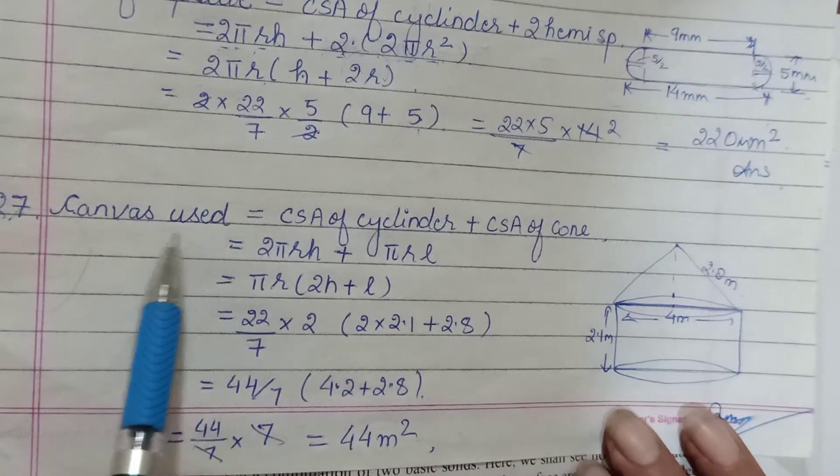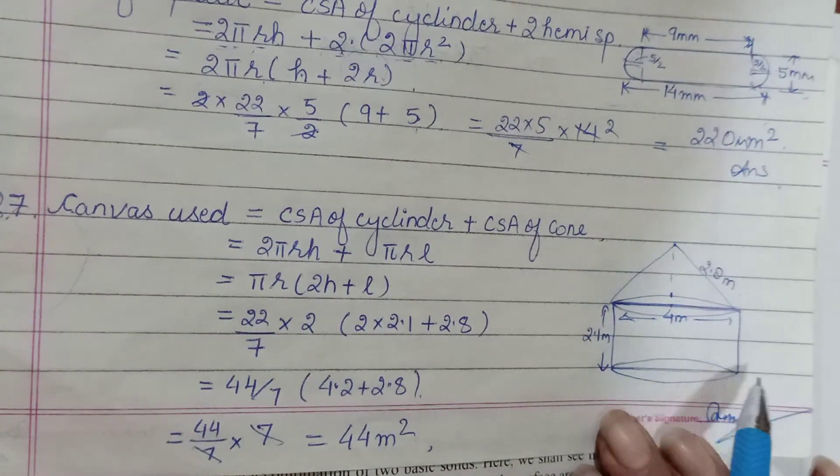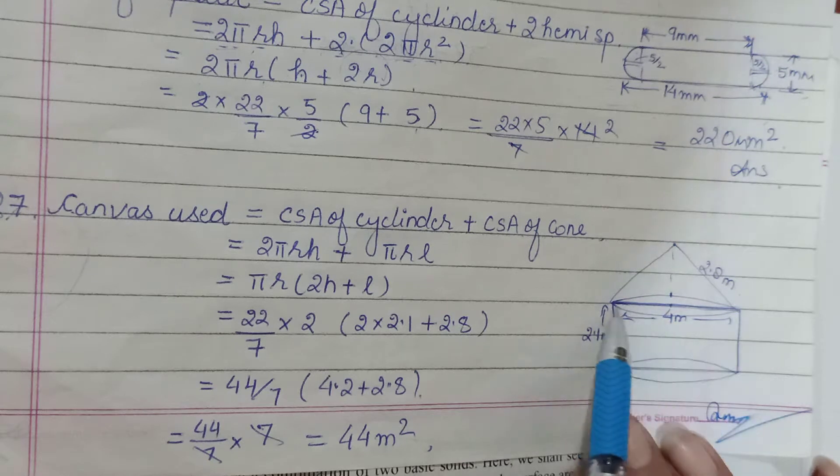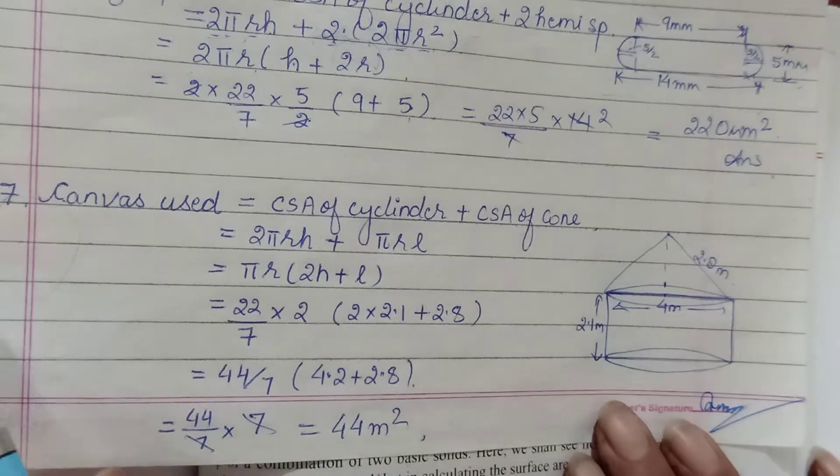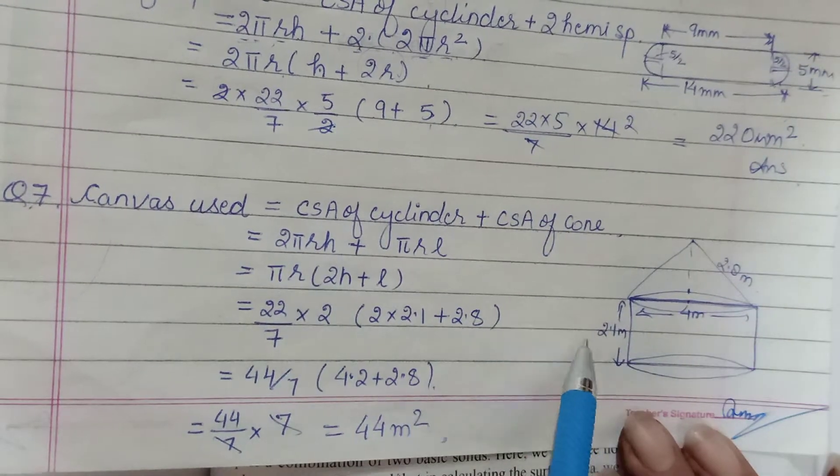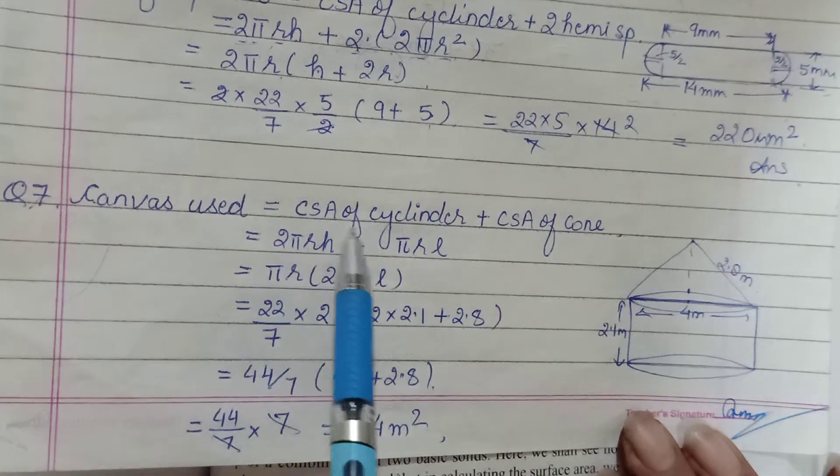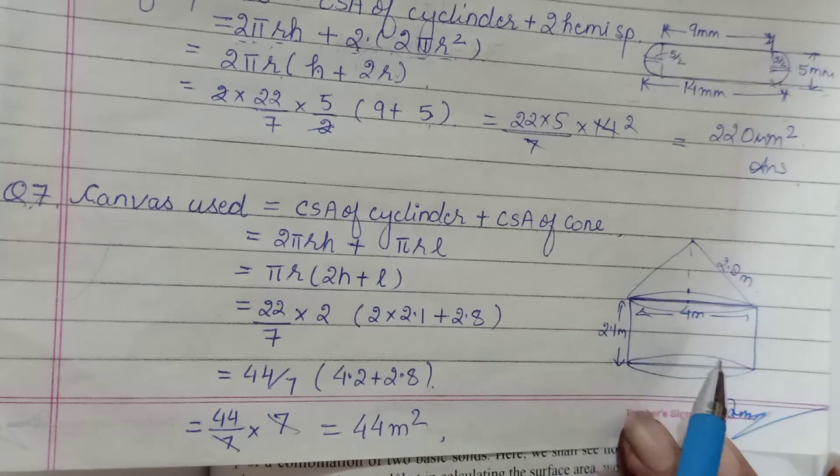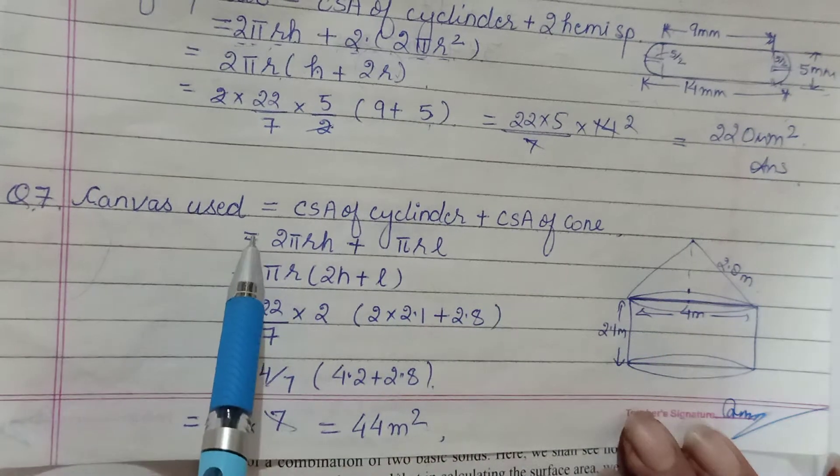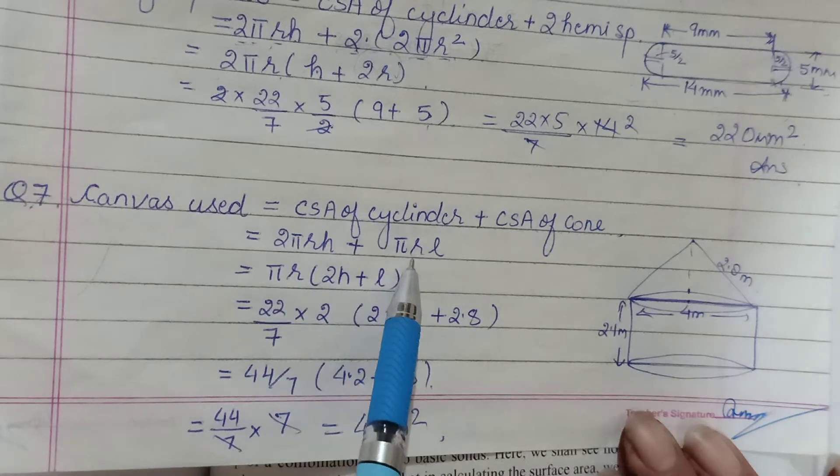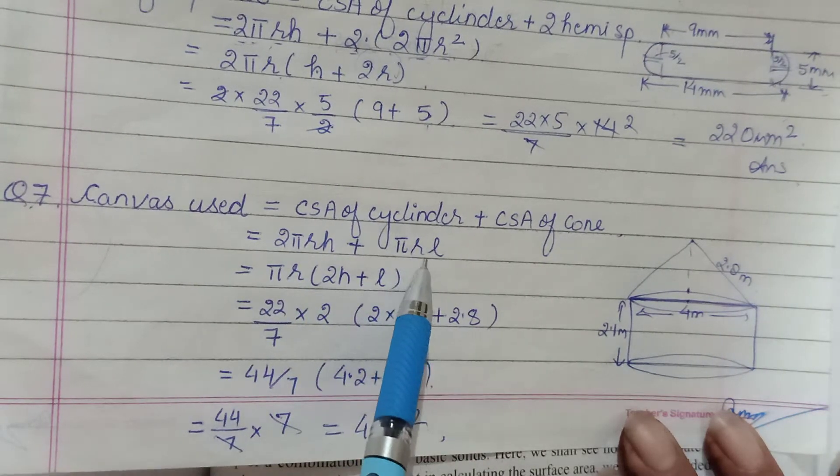We can see the tent has a cylindrical portion with canvas, and then the top portion has canvas. The base will not be covered naturally. So, the canvas required will be having CSA of cylindrical part and CSA of this conical top. CSA of cylinder is 2πrh, this is πrl. Just have to put the values.